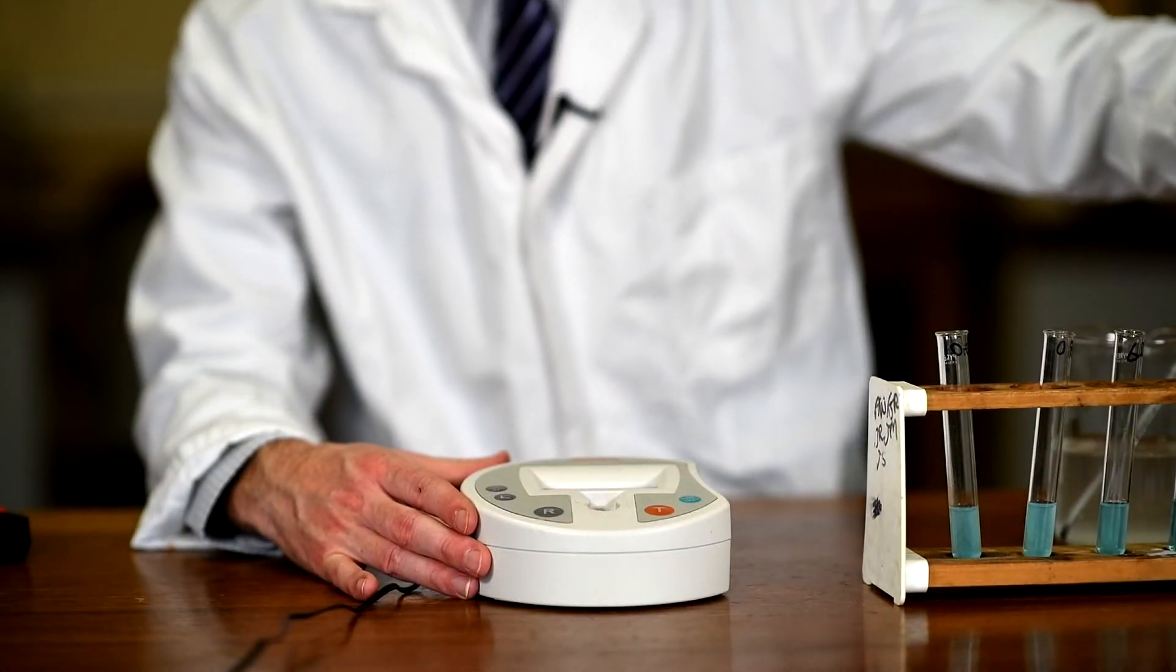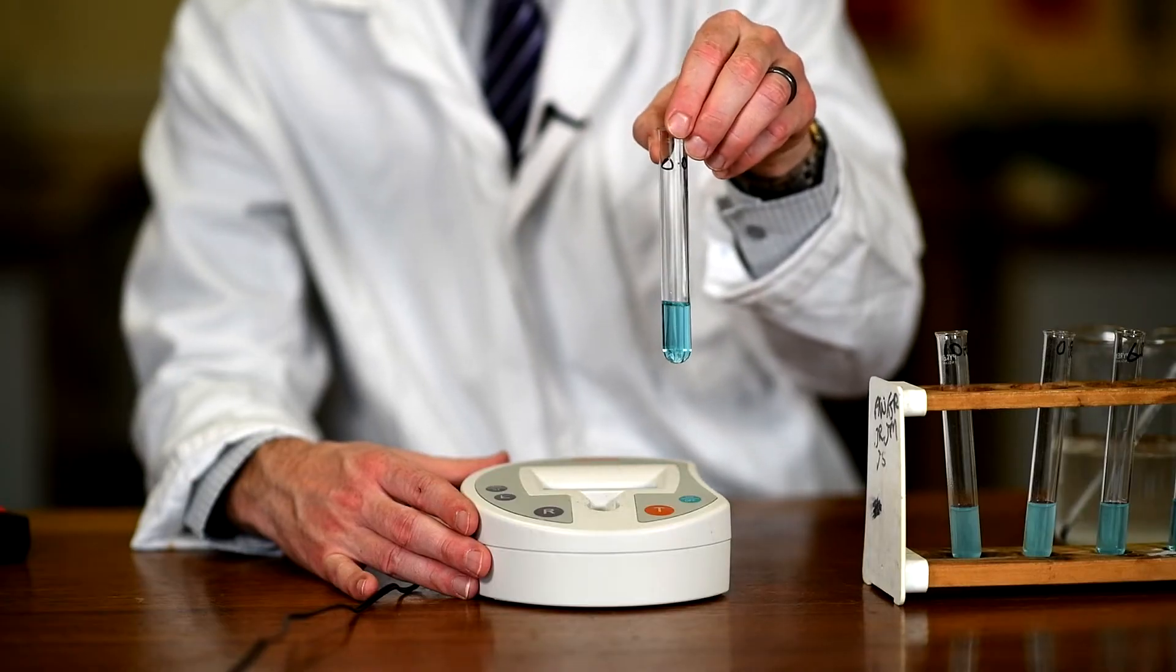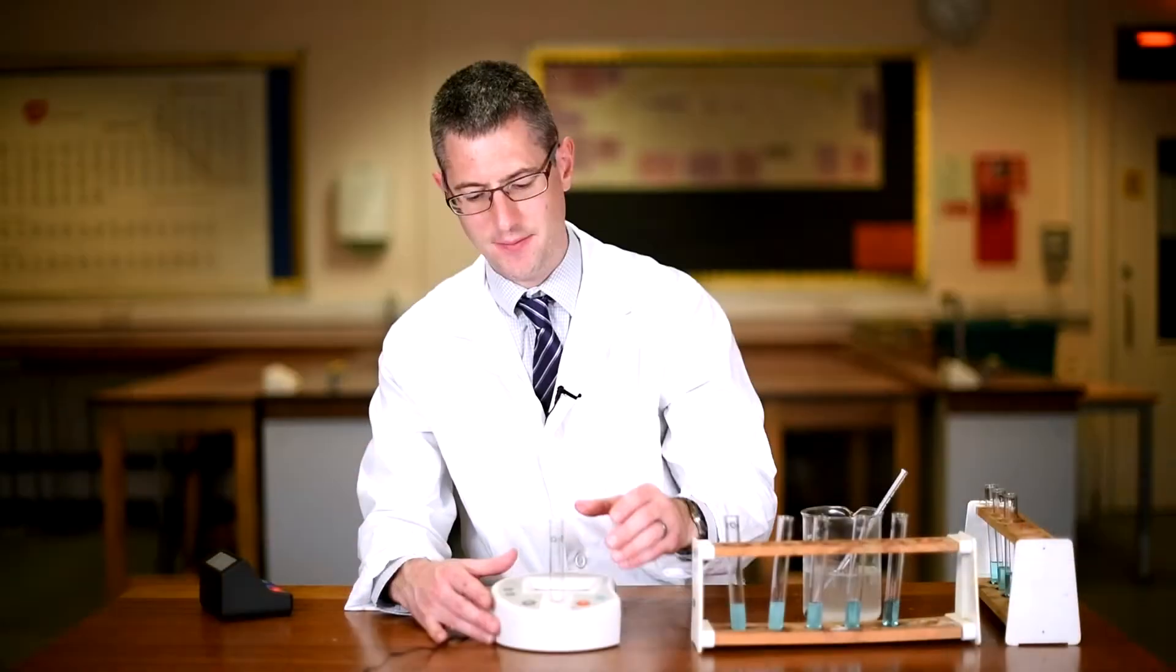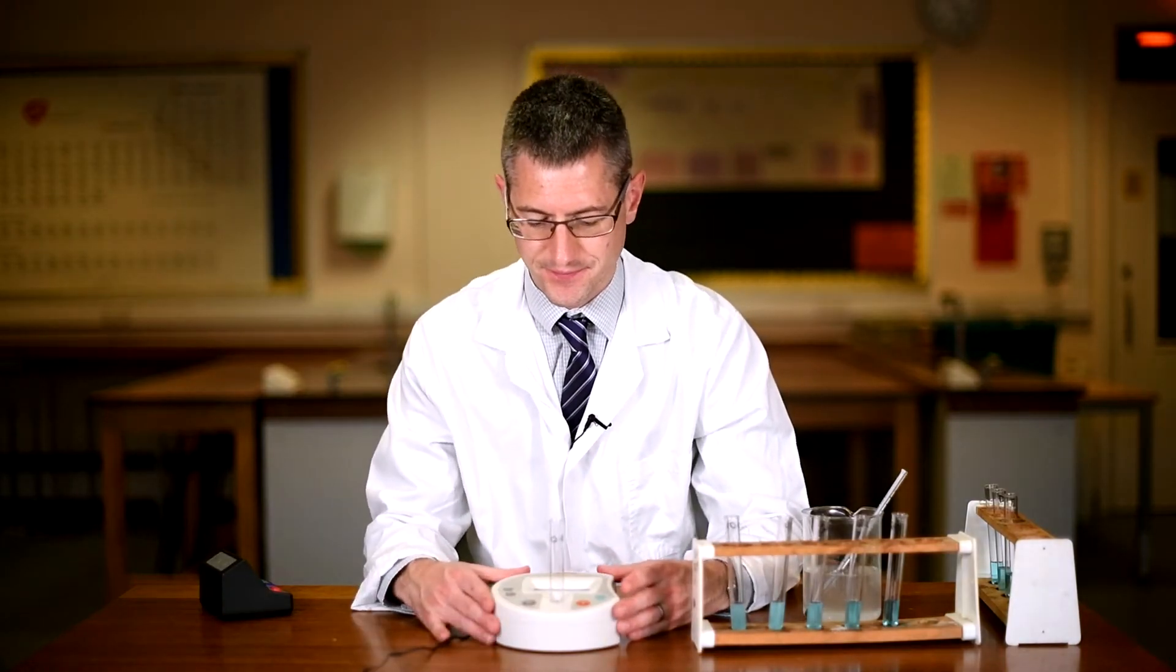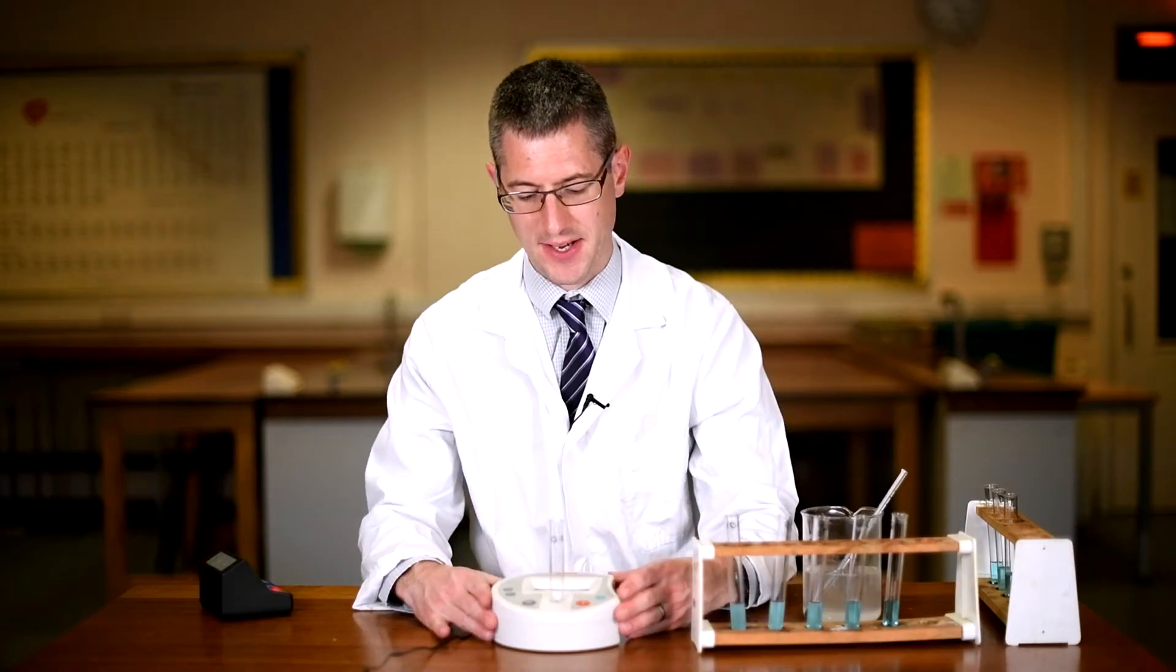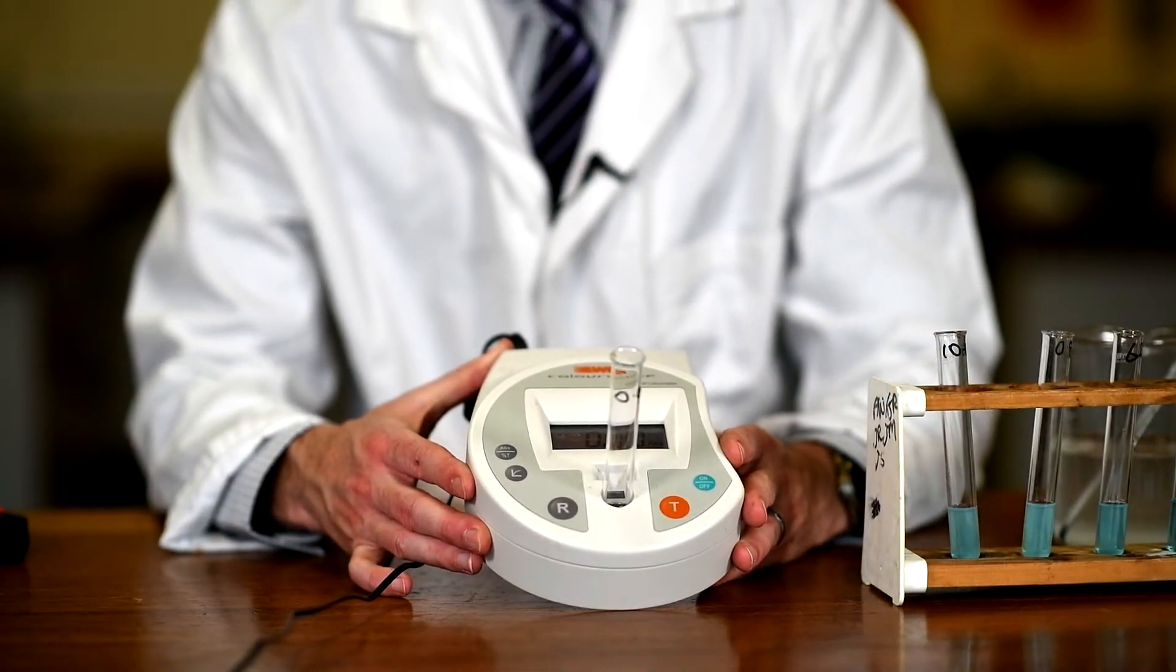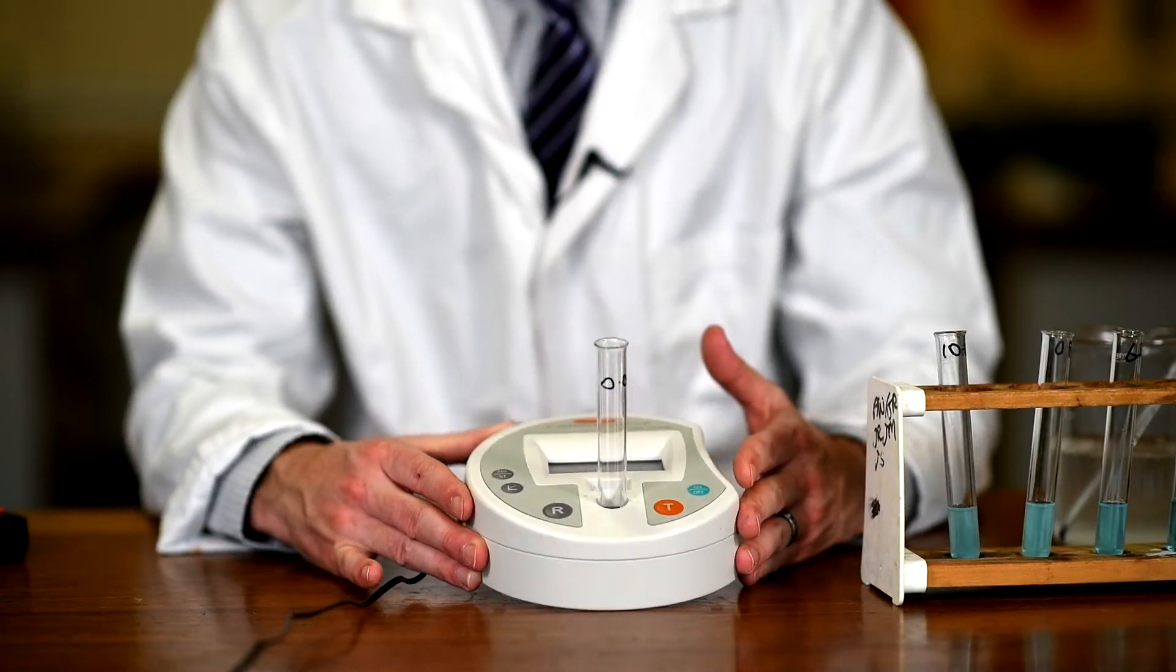The first thing I'm going to do is put in a reference sample or blank. This is going to be my zero millimoles per decimeter cubed of glucose. Put this in, in this machine press R for reference, and it is reading of 0.080 absorbance. So I'm telling the machine there is no absorbance of light through this sample. Hence the machine is now blanked.